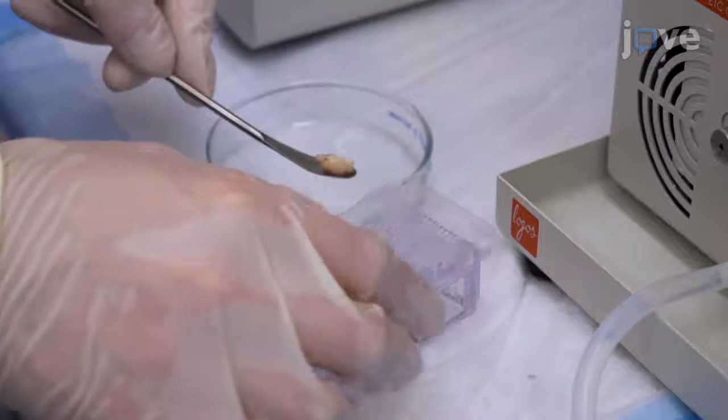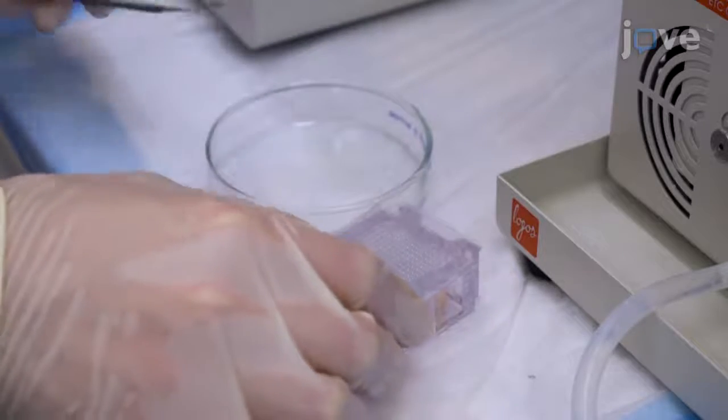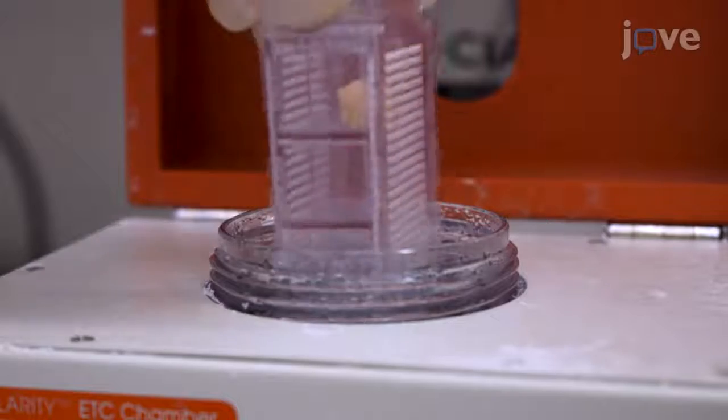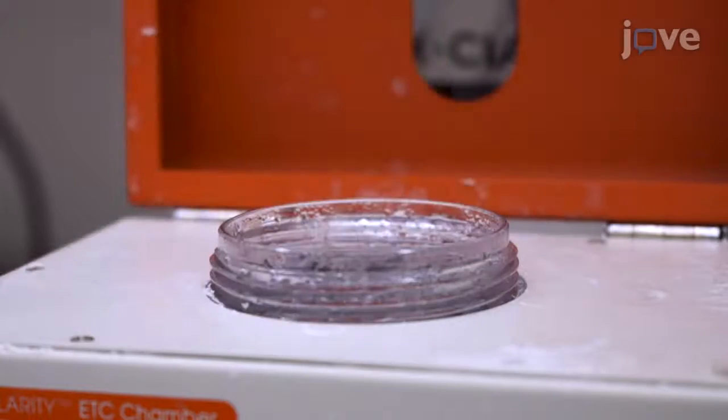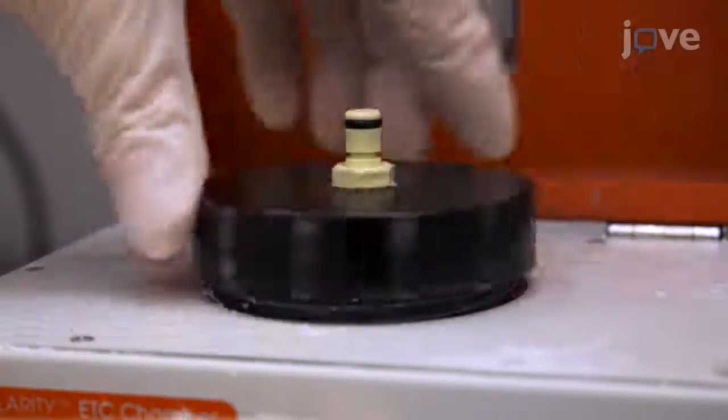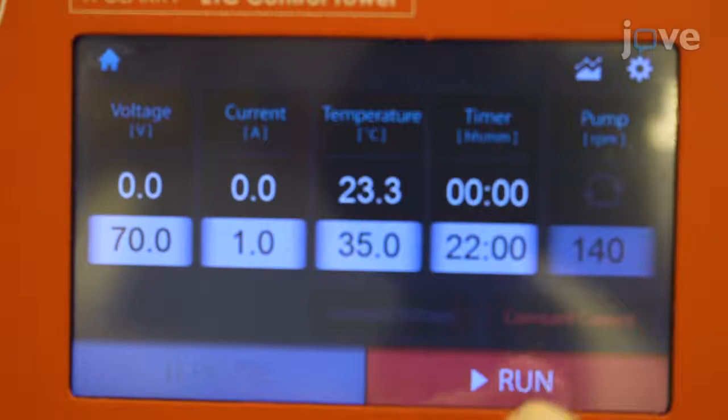Place the polymerized tissue sample in the electrophoresis chamber, keeping track of the orientation of the tissue within the chamber. Fill the chamber and reservoir with the supplied electrophoresis STS buffer.